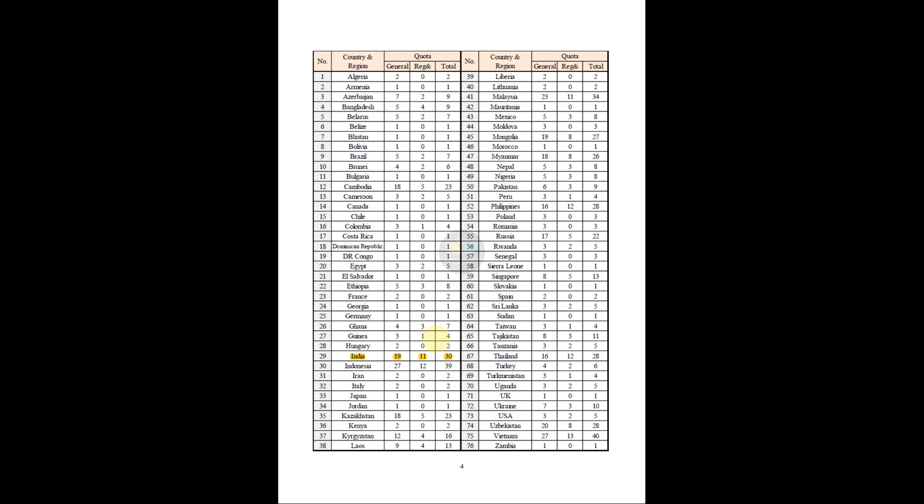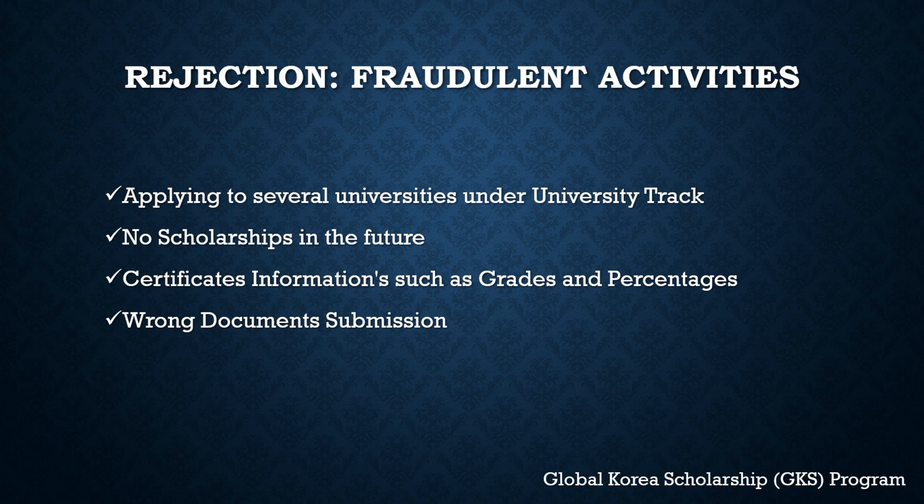Now let's see the other things in this scholarship program — specifically when your application will possibly be rejected. If you apply to more than one university under the university track, you might face rejection. Please keep in mind that reviewers will follow your application very carefully and you cannot cheat in the application process. Also, you will not receive any scholarship in the future if you commit this kind of fraud in the university track applications. Please be careful about that.